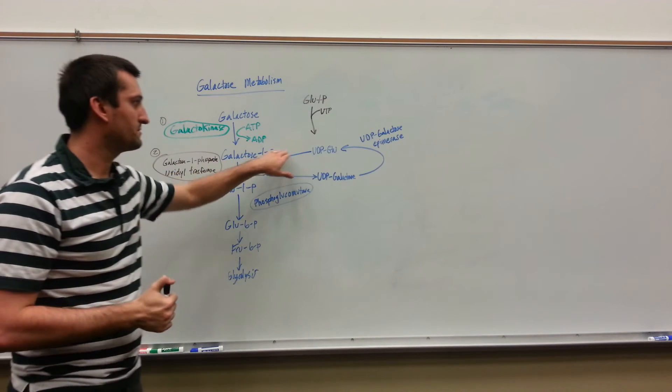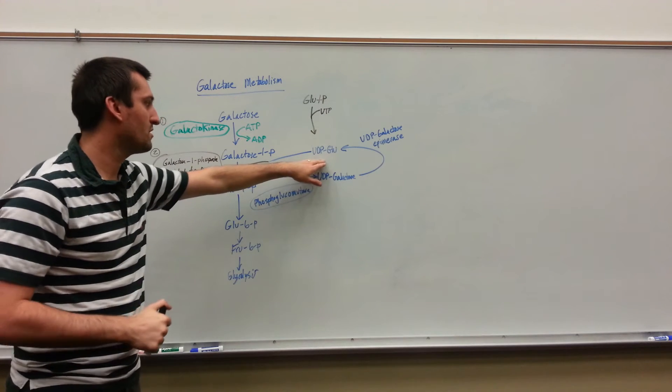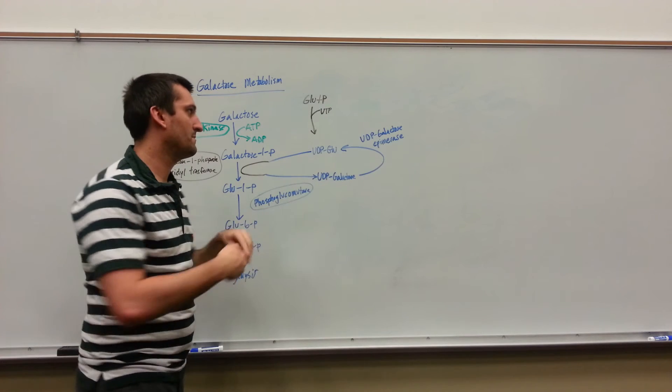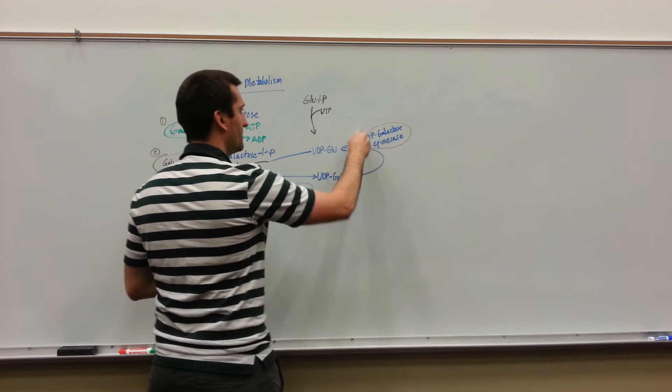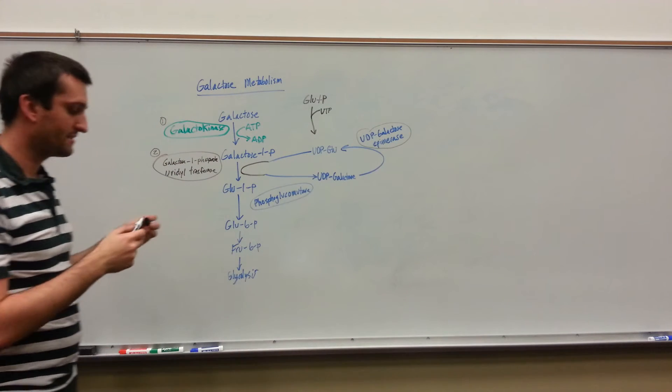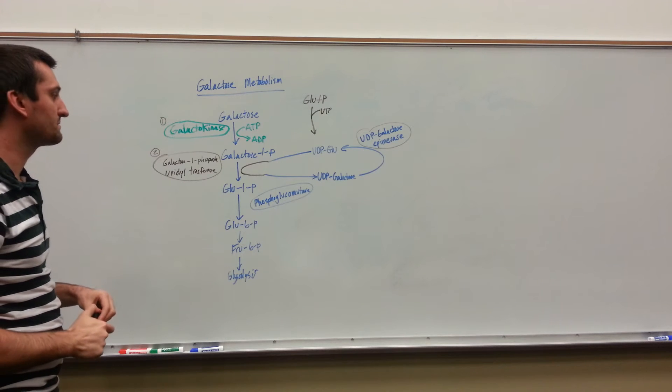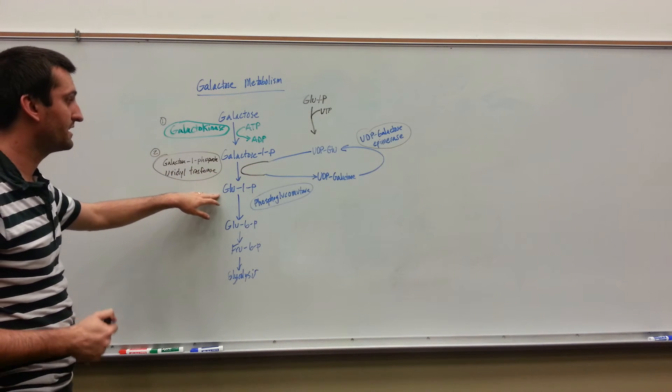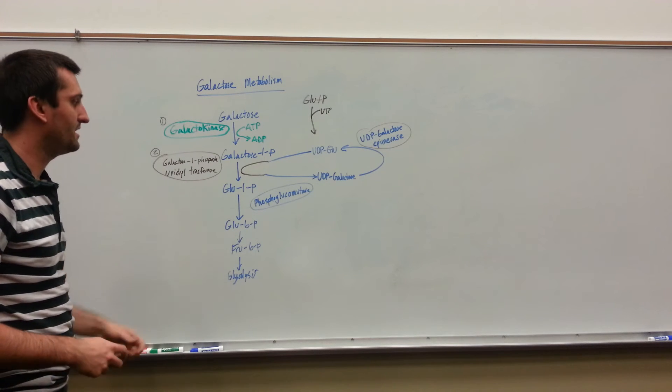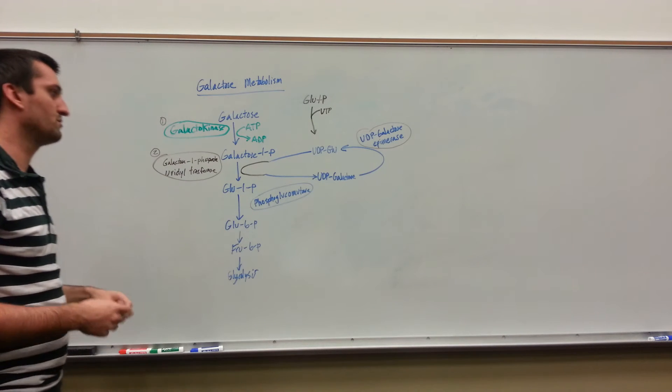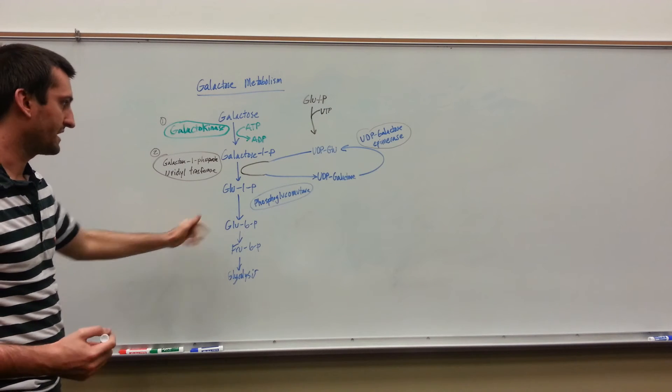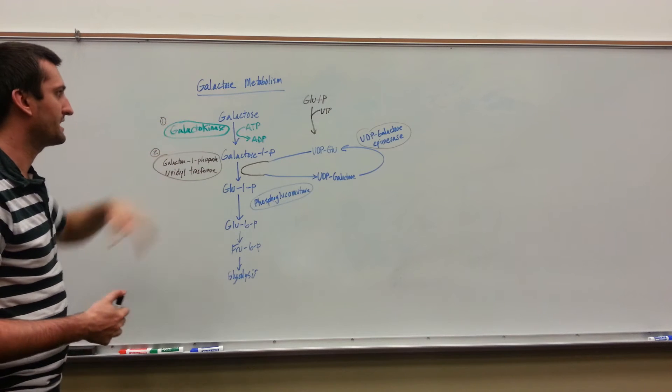This can be recycled. Once we make some UDP glucoses, they'll eventually get converted here. But we have an enzyme that'll keep creating our reactant so we can keep using it over. Once we've got our glucose 1-phosphate, we shift around that phosphate group using the phosphoglucomutase enzyme. Eventually we're in glycolysis. That's the breakdown of galactose.